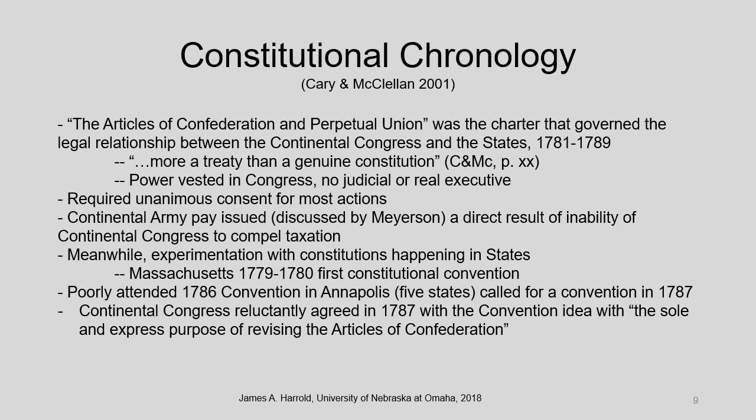The Articles of Confederation were really more like a treaty than a constitution. Power was vested in Congress; there was no real executive — only a president of the congress as presiding officer — and no national judicial function. Congress required unanimous consent of all states on most actions. One crisis that led to the Constitutional Convention was that Congress couldn't pay members of the Continental Army, some of whom hadn't been paid in years. A previous attempt in 1786 in Annapolis was attended by only five states, but it led the Continental Congress to agree on a constitutional convention in 1787.